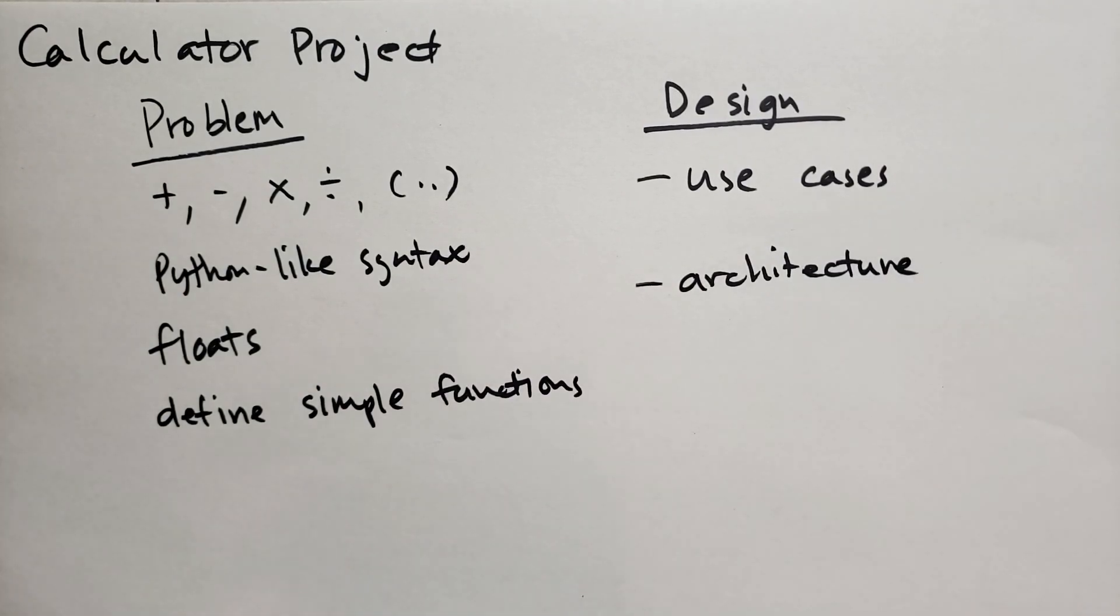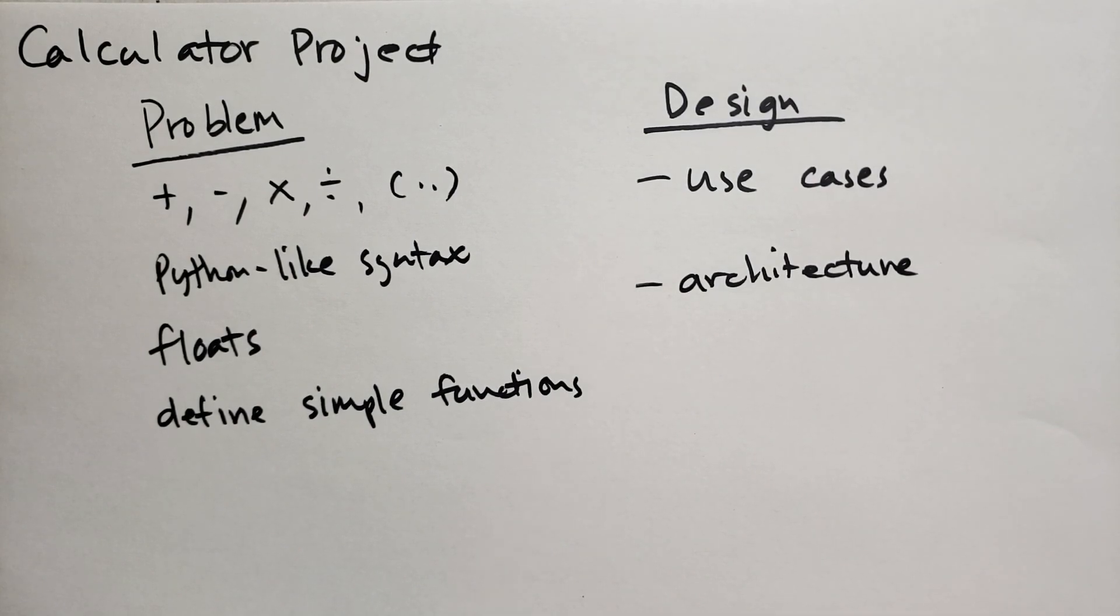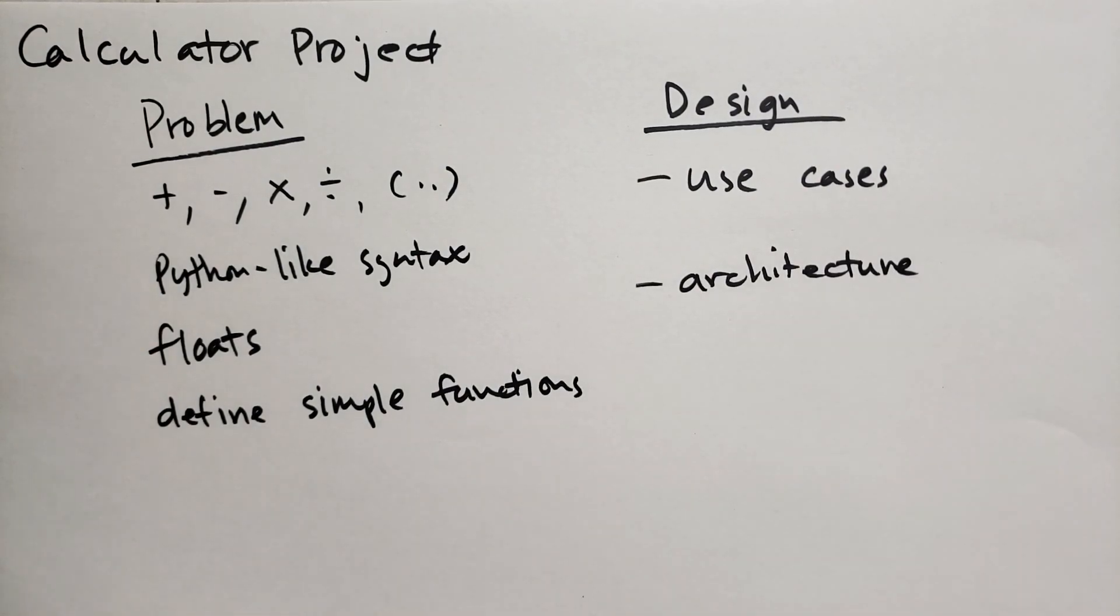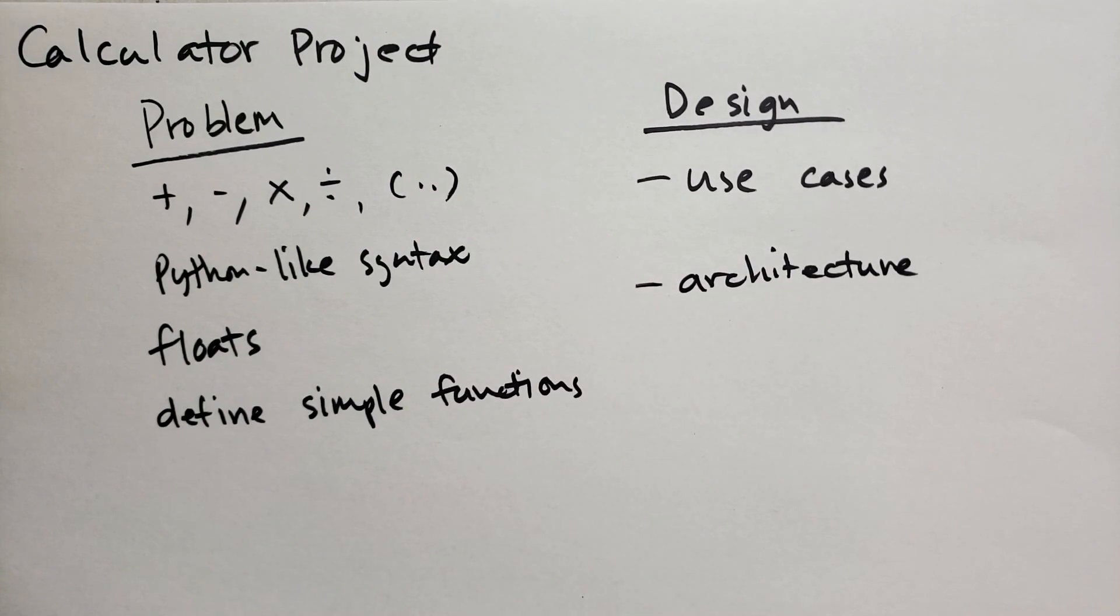We need two things: one is the use cases and the other is the architecture. The use cases will cover what the users will do and how they'll interact with the system. I have a bit of an idea on how the user is going to use the system, but you might have a different idea, and I'm more than open to different ideas you might have. So if you have ideas, send them in. The second thing is the architecture. By architecture, I mean what code are we going to write, how is the program going to actually run, and how is the code going to be organized.